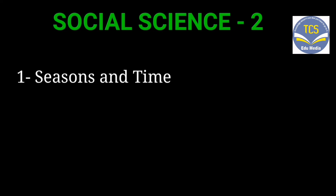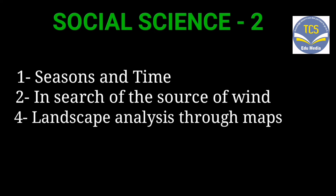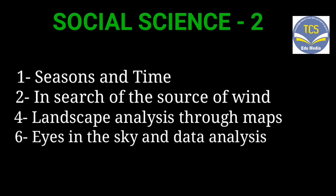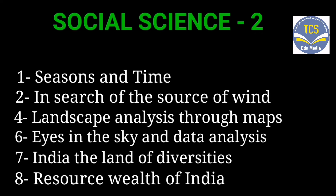Now we are analysing Social Science 2. The first chapter is 'Seasons and Time.' The second chapter is 'In Search of the Source of Wind.' The fourth chapter is 'Landscape Analysis through Map.' The sixth chapter is 'Asynosky and Data Analysis.' The seventh chapter is 'India the Land of Diversities.' The eighth chapter is 'Resource Wealth of India.' These chapters are related to Geography.